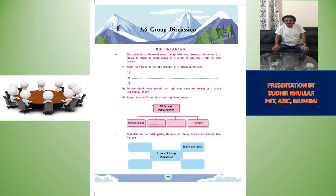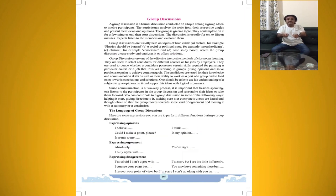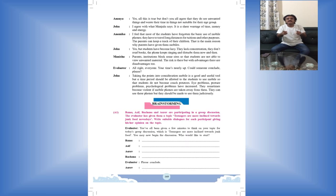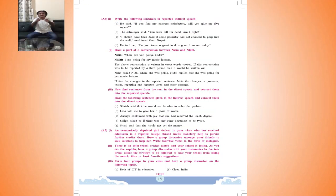Hello dear young friends. Before we start learning the nuances of a group discussion in unit 3.6, starting at page number 166 of your new English Shivag Bharti book of Standard 12, I wish to quote a few headlines from the leading newspapers which show us the present scenario of soft skill acquisition status of the new generation.